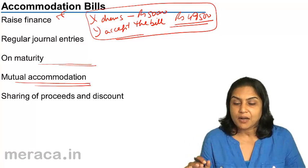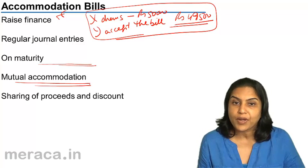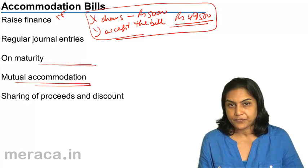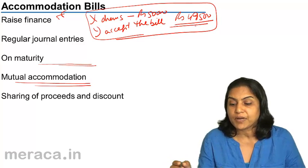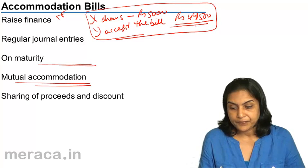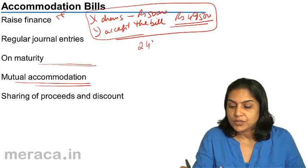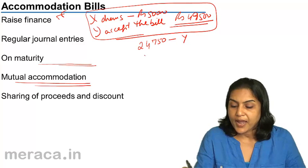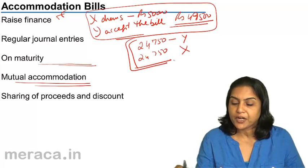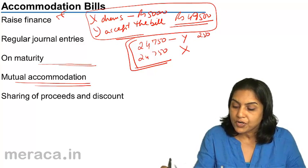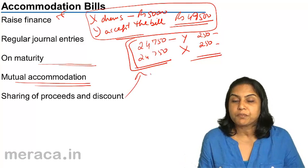Sometimes, in this example where X drew a bill for Rs. 50,000, X and Y might agree to share the proceeds equally. In that case, when X discounts the bill for Rs. 49,500, he will send half of that — Rs. 24,750 — to Y. X will also enjoy Rs. 24,750. Both enjoy Rs. 24,750 and each bears a discount charge of Rs. 250. So the proceeds and the discount are both shared equally.